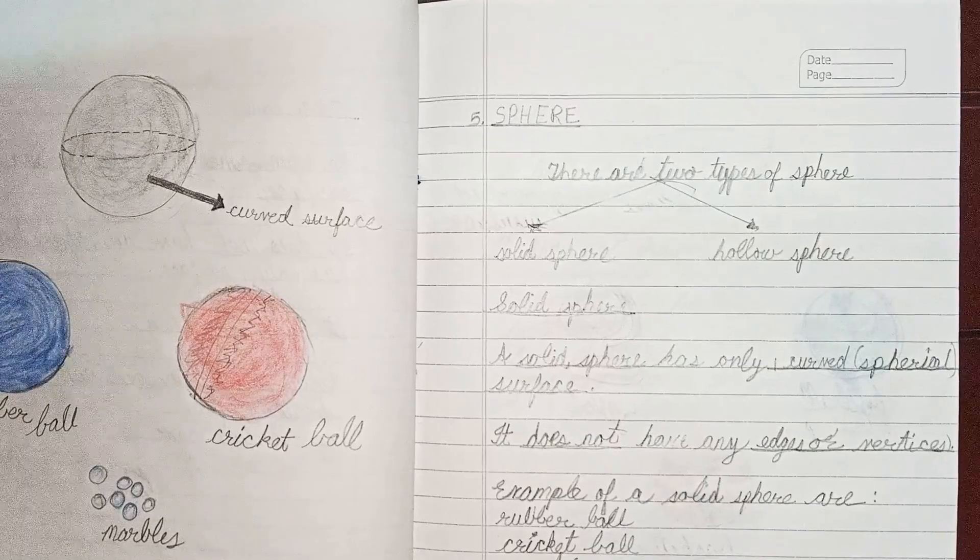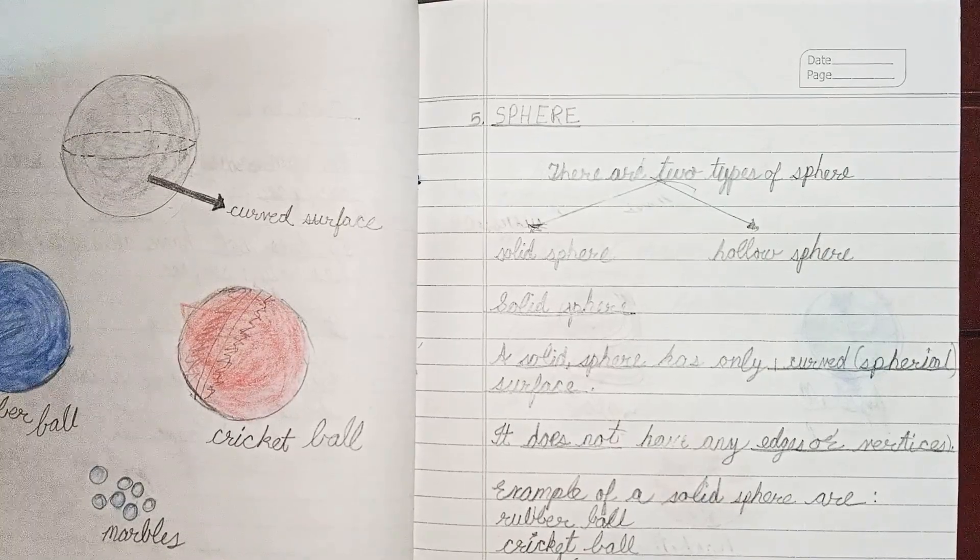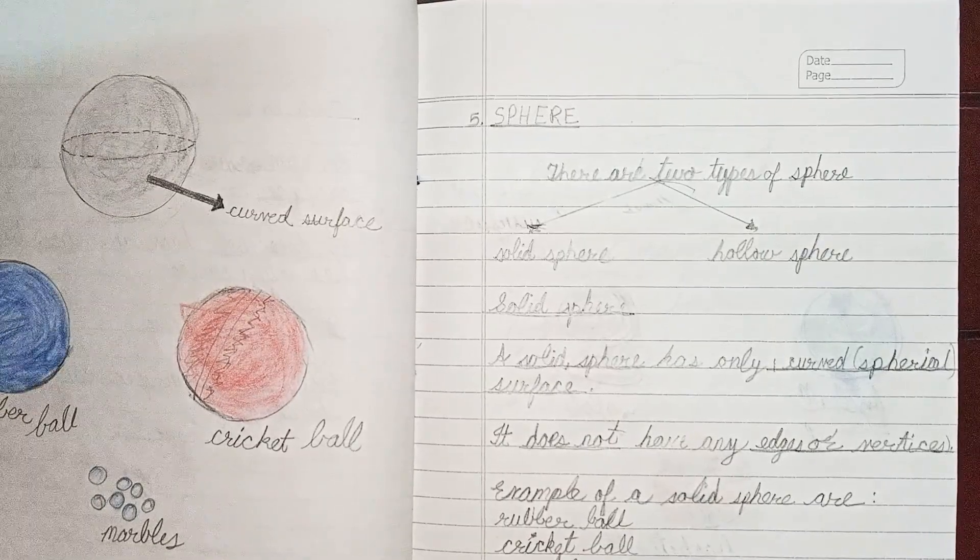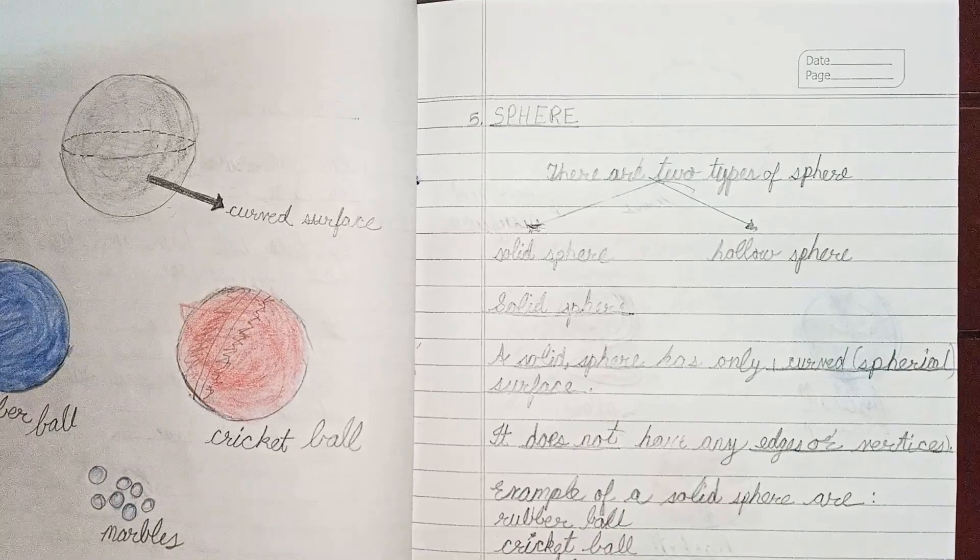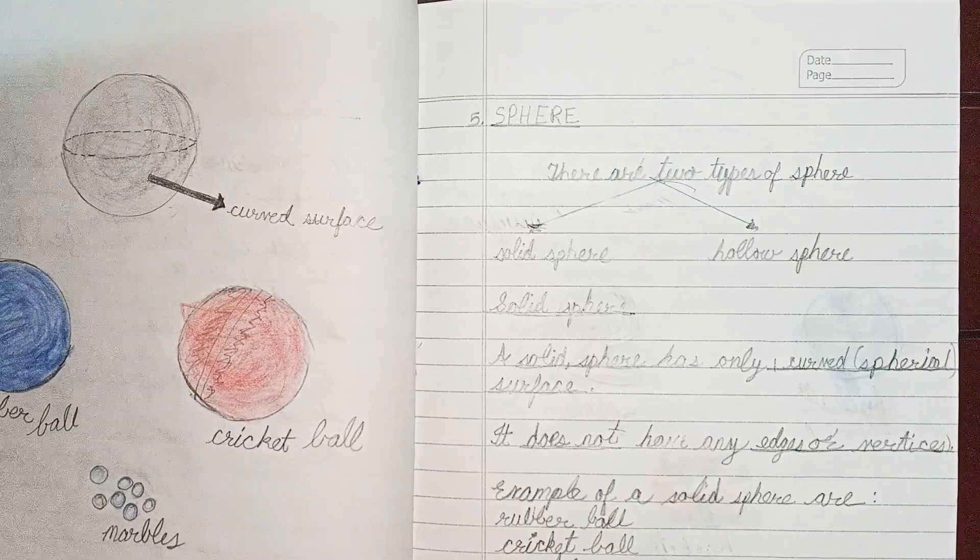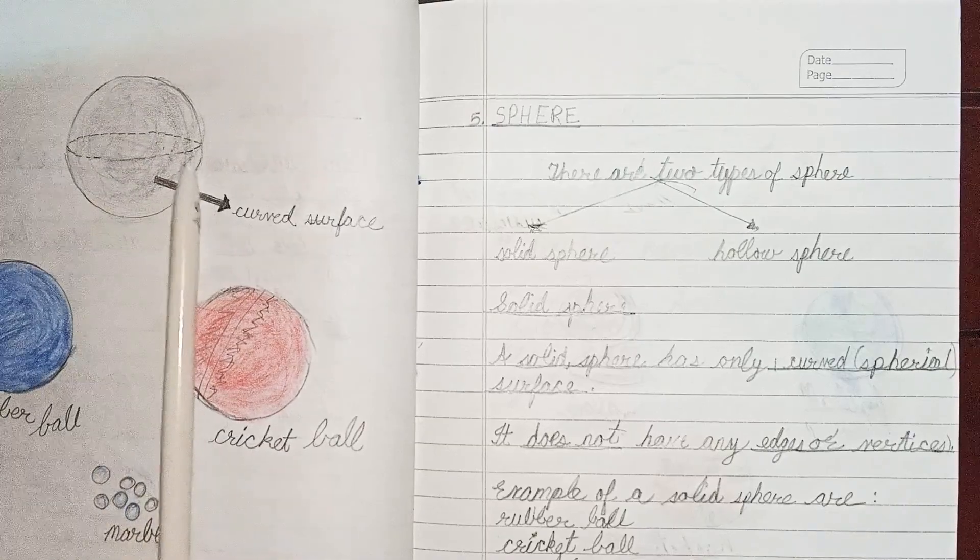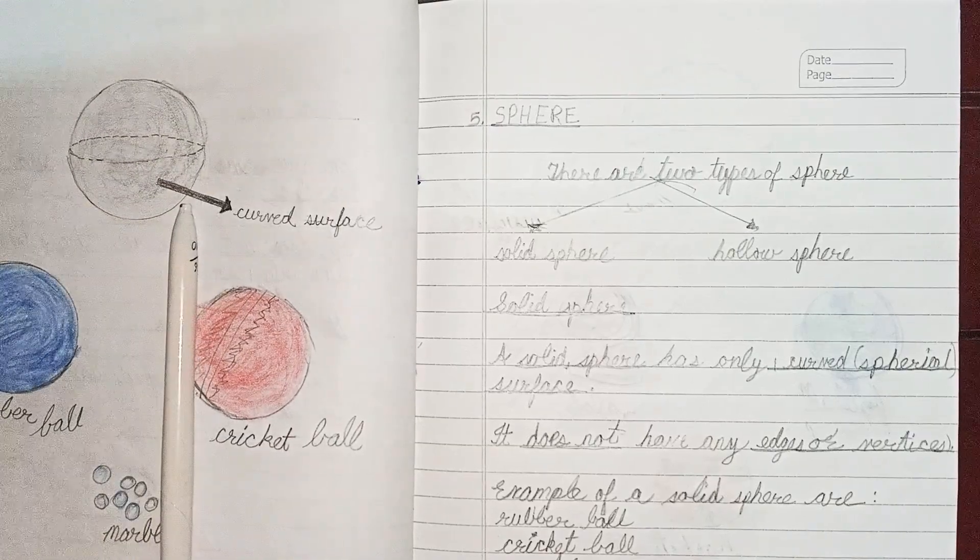The next solid figure is sphere. This is also of two types: solid sphere and hollow sphere. A solid sphere has only one curved spherical surface.